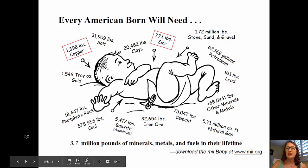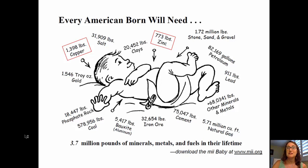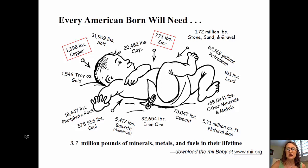Let's start out thinking about our demand for minerals. Every American born today will need a variety of different minerals throughout their lifetime. In fact, they will need 3.7 million pounds of minerals, metals, and fuels in their lifetime. That includes 773 pounds of zinc, 911 pounds of lead, 18,000 pounds of phosphate rock, 5,417 pounds of bauxite (the ore of aluminum), and 75,000 pounds of cement.